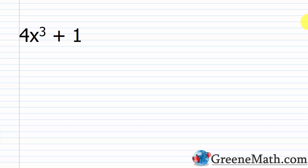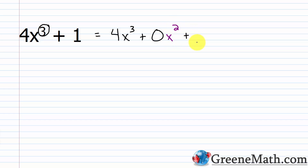Look at something like 4x cubed plus 1. If I'm looking for what's missing, the highest power on x is a 3 — we have x cubed. So I'm missing x squared, and I'm missing x to the first power. So I can rewrite this as 4x cubed plus 0x squared plus 0x to the first power, and then finally plus 1. So I have 0 as a placeholder and 0 as a placeholder — I have 0x squared and 0x to the first power, representing them with 0 as the coefficient, because 0 times anything is 0.